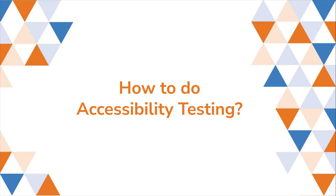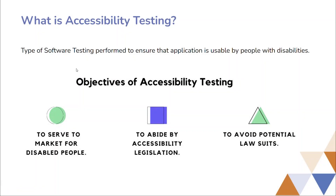Today I am going to talk about accessibility testing. So first of all, what is accessibility testing? Accessibility testing is a type of software testing performed to ensure that the application is usable by people with disabilities, like hearing, colorblindness, old age, and other disadvantaged groups.